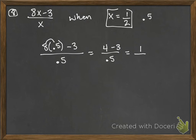4 minus 3 is 1, divided by 0.5. And if we put that in the calculator, you're going to get a value of 2. 1 divided by 0.5, so you have to put the 1 in first, divided by 0.5 is going to give you 2.